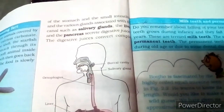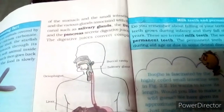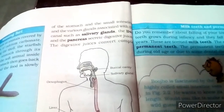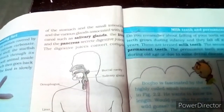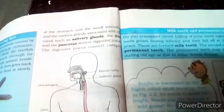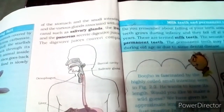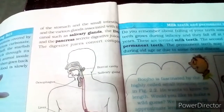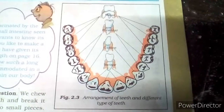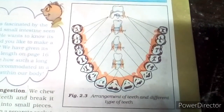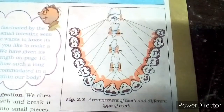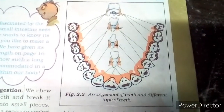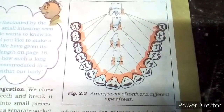The food is taken into the body through the mouth. The process of taking food into the body is called ingestion. We chew the food with our teeth and break it down mechanically into small pieces. Each tooth is rooted in a separate socket in the gums. Our teeth vary in appearance and perform different functions. The first set of teeth grown during infancy are the milk teeth, and they fall off between the ages of 6 to 8 years.